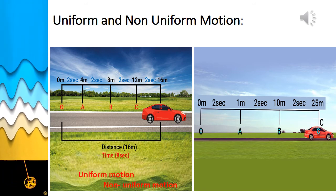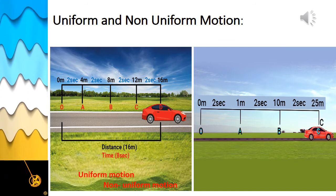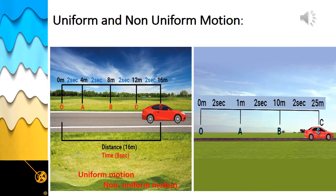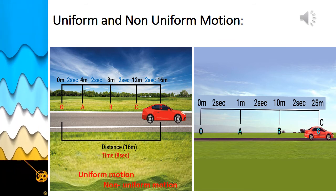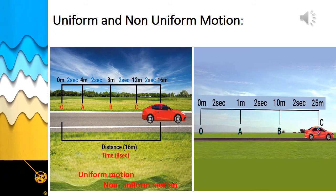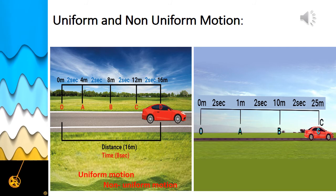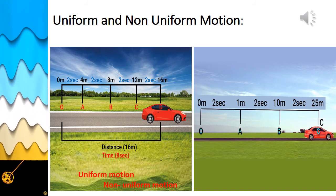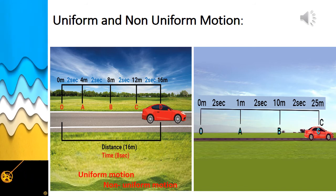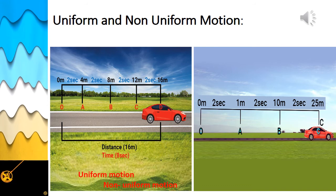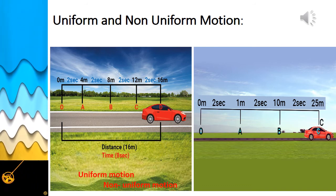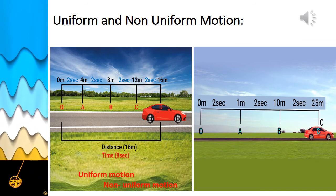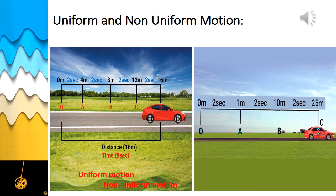Suppose an object keeps moving in one direction along a straight line path. When it covers equal distances in equal intervals of time, its speed remains constant — such motion is called uniform motion. An object moving along a straight line is in uniform motion if its speed remains constant. For example, if a car is moving 4 meters in every 2 seconds, it covers equal distance in equal intervals of time, so it is in uniform motion.